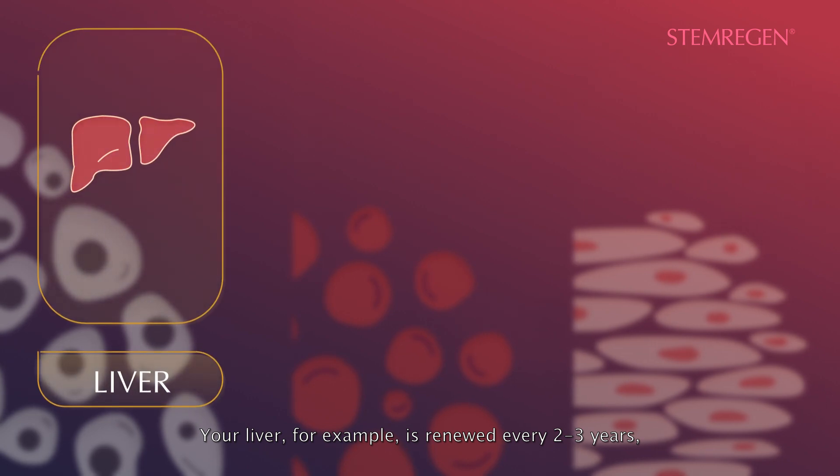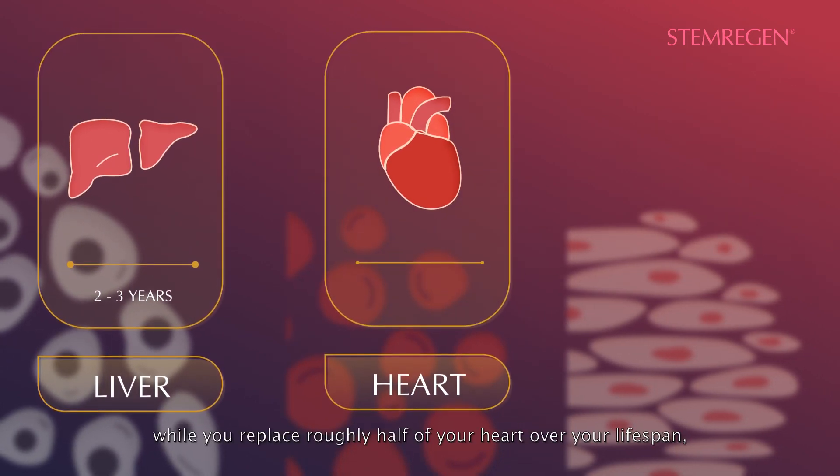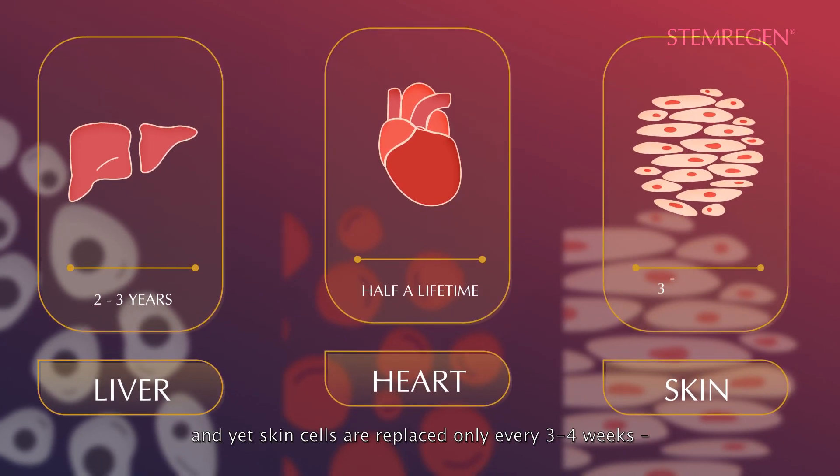Your liver, for example, is renewed every two to three years, while you replace roughly half of your heart over your lifespan, and yet skin cells are replaced only every three to four weeks.